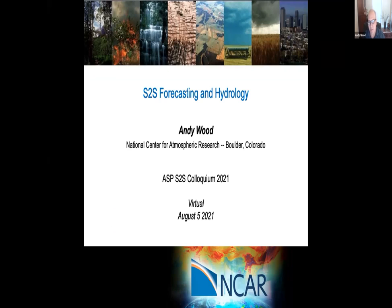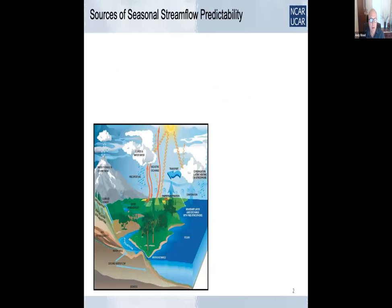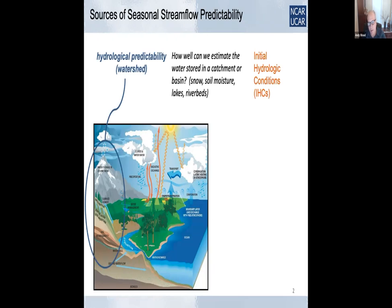I'll talk about some methods and concepts in trying to do S2S prediction for hydrology and streamflow. The first part of my talk will mainly be about seasonal streamflow predictability and these concepts of where we see sources of predictability. And then I'll give some examples of ways the community is trying to harness climate and watershed predictability to create real-world forecasts. One of the main things to think about when doing S2S prediction in hydrology is that there are several sources of skill involved.